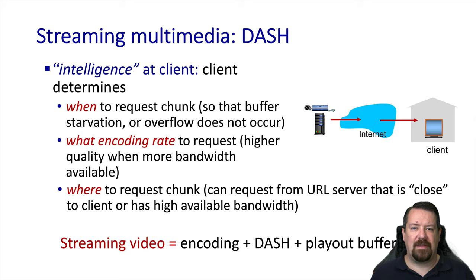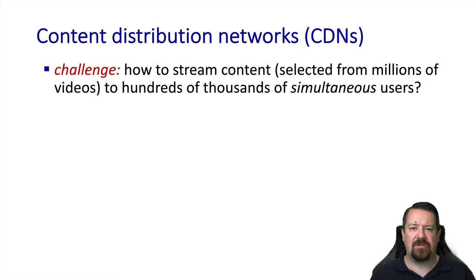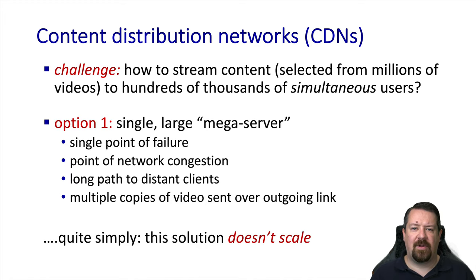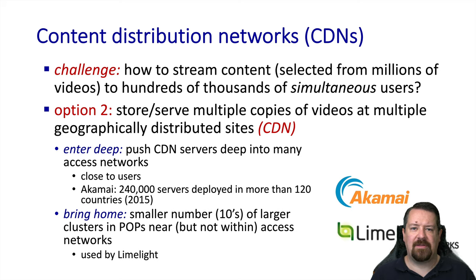That gets us to talking about CDNs — a system of having the same content stored in many different places and deciding which location a given client should connect to. Content distribution solves the challenge of providing a large variety of content to many users distributed all over the world. A single large server is not a scalable solution, both from the standpoint of being a single point of failure and from the standpoint of concentrating all requests in one place, dealing with congestion and latency issues. So instead, we use many servers with many copies of the content distributed across them, placed all over the internet.